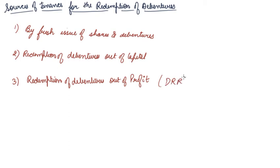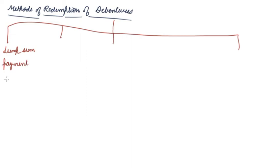Now the methods of redemption of debentures. There are four methods of redemption of debentures. The first method is lump sum payment at the end of fixed period.